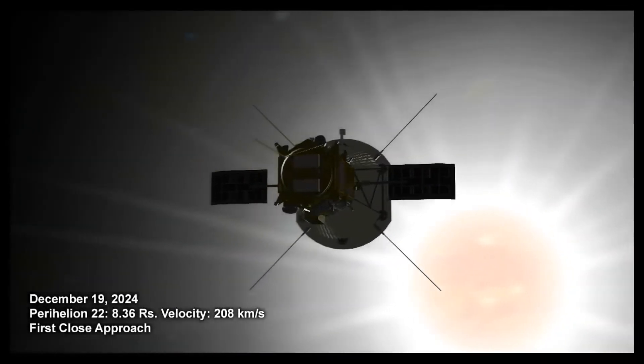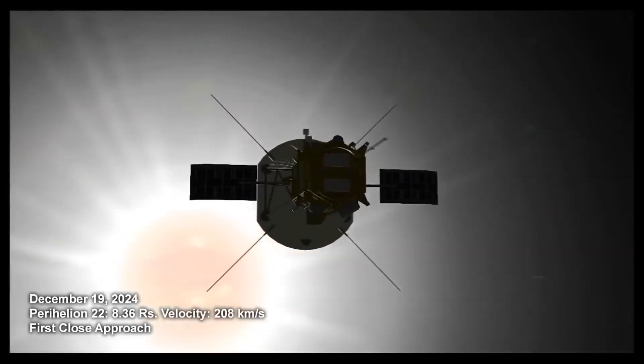When the probe approaches its perihelion, its closest distance to the Sun, its heat shield will heat up to 1400 degrees Celsius. That is about three times hotter than the temperature on the side of Mercury facing the Sun. Nonetheless, the probe will continue its work in cosmic lava.